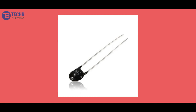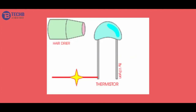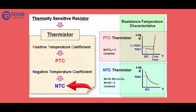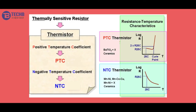The temperature sensor is also of a thermistor type. When atmospheric temperature is applied, it measures the heat. If the thermistor is NTC — Negative Temperature Coefficient — then as temperature rises, resistance decreases. If the thermistor is PTC — Positive Temperature Coefficient — then resistance increases with temperature.